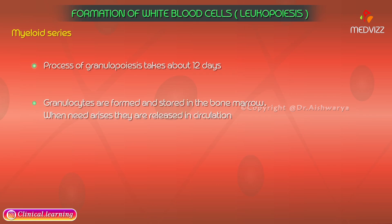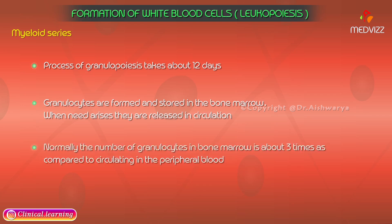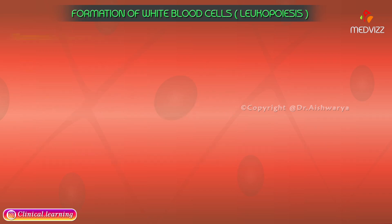Granulocytes are formed and stored in the bone marrow; when the need arises, they are released into circulation. Normally, the number of granulocytes in the bone marrow is about three times the number circulating in the peripheral blood.